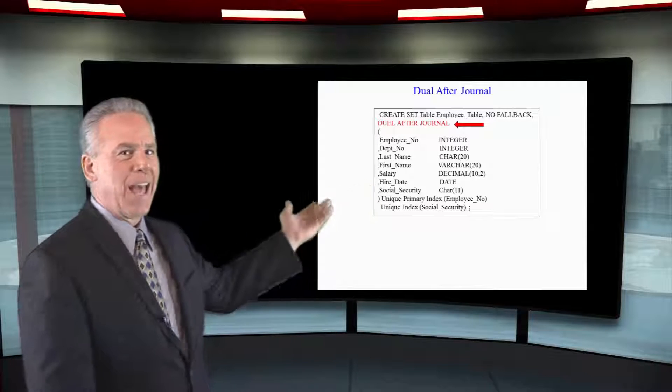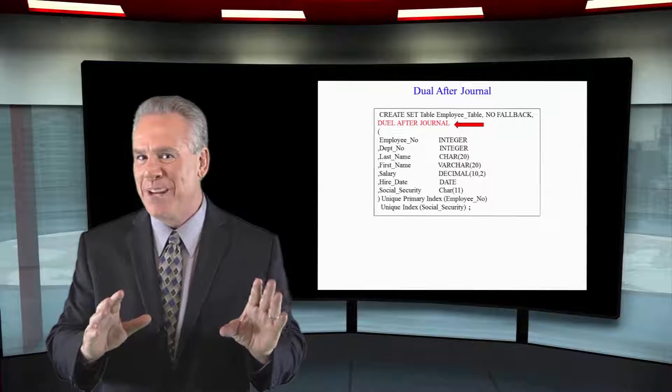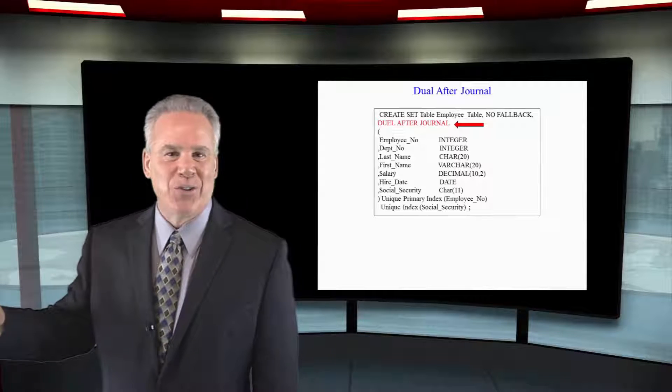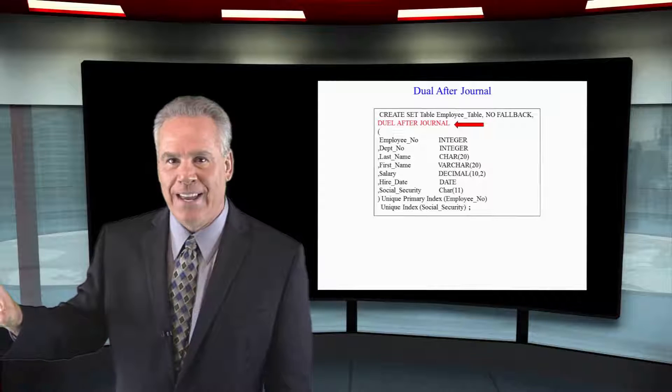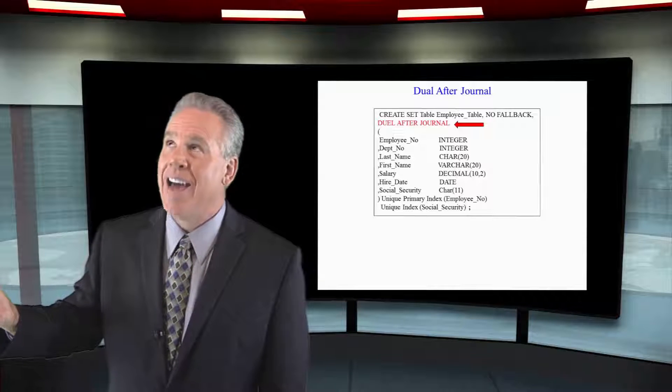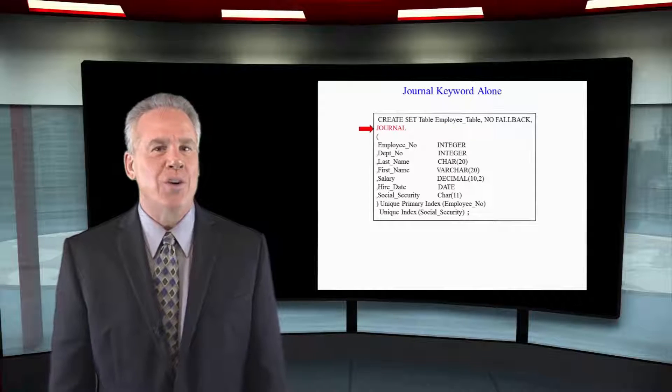Here is a dual after journal. Let's take a picture after any row changes, insert, update, or delete. Let's save it to that journal area. And let's save two of those because I'm really paranoid these days. You know anything could happen. I think the roof's falling in.